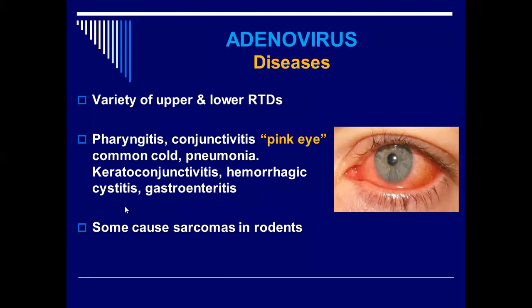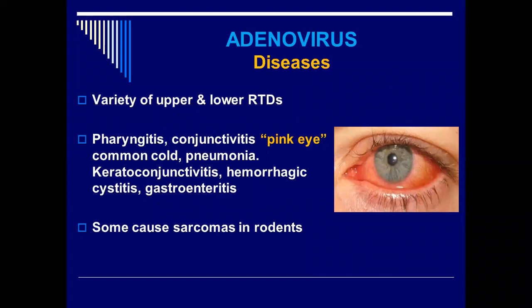The adenovirus causes diarrhea but not dysentery. The virus protein appears to be hemolytic at the site causing cystitis. Some adenoviruses can also cause sarcoma in rodents, but sarcoma has not been documented in humans.